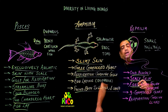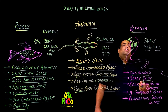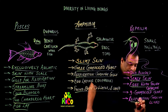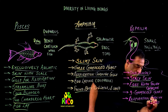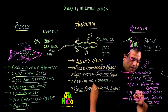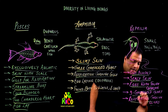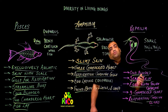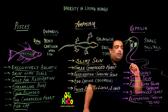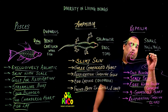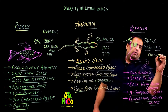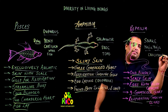Respiration in reptiles takes place through the lungs — no gills. They have a three-chambered heart as explained. Examples of reptiles include snakes, crocodiles, and turtles.